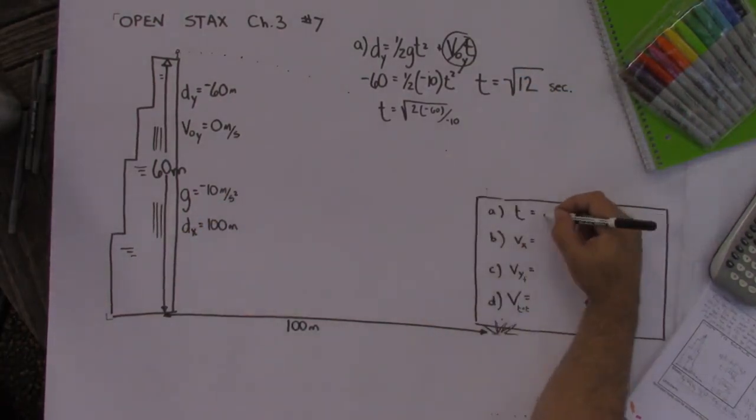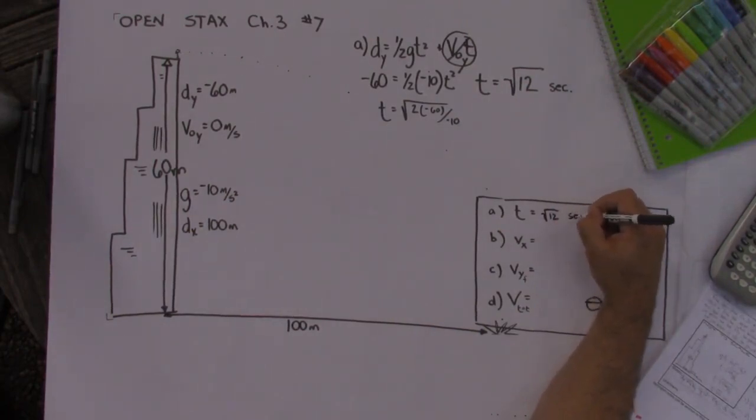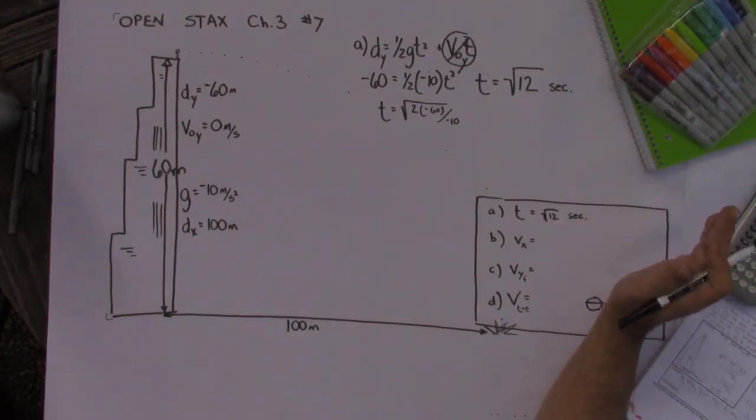If you want to type that into your calculator you can, but I'm going to leave that like that as it is for now. All right there we go. That's our first answer. So the time root 12 seconds.